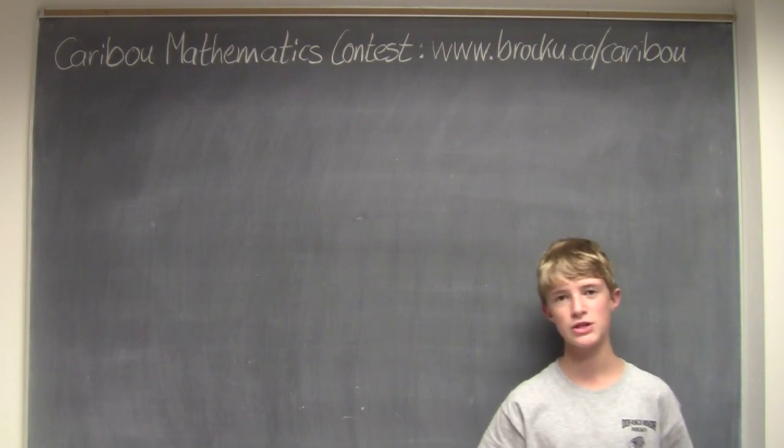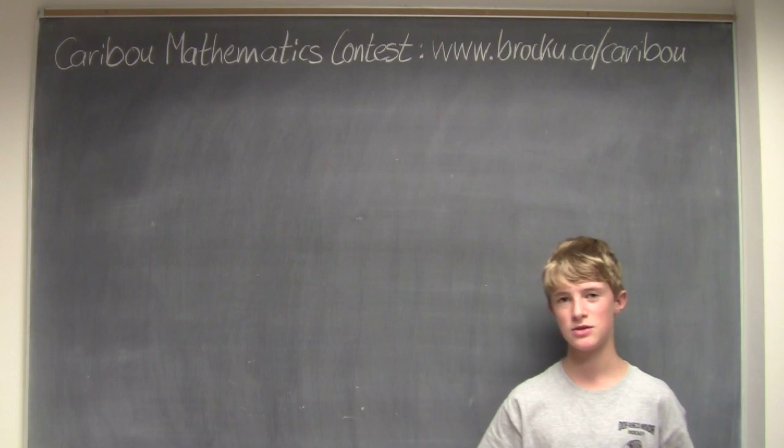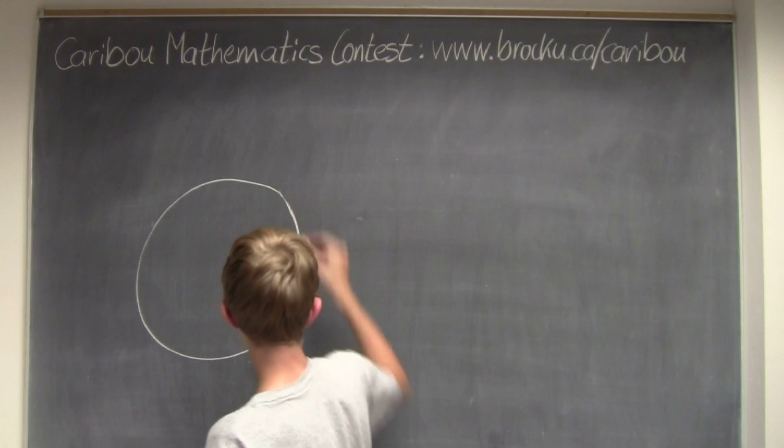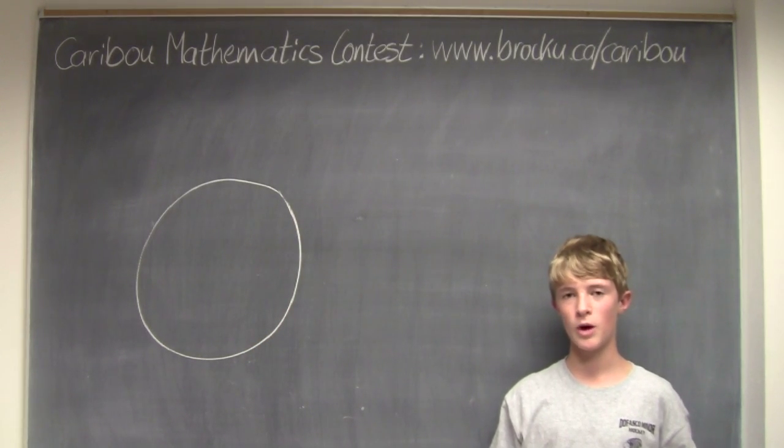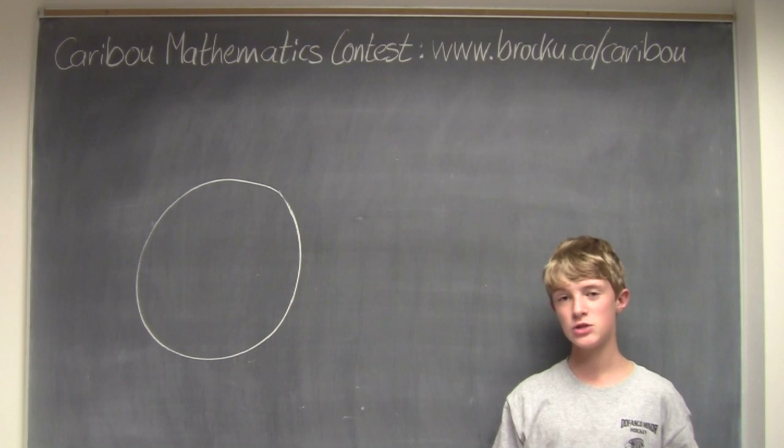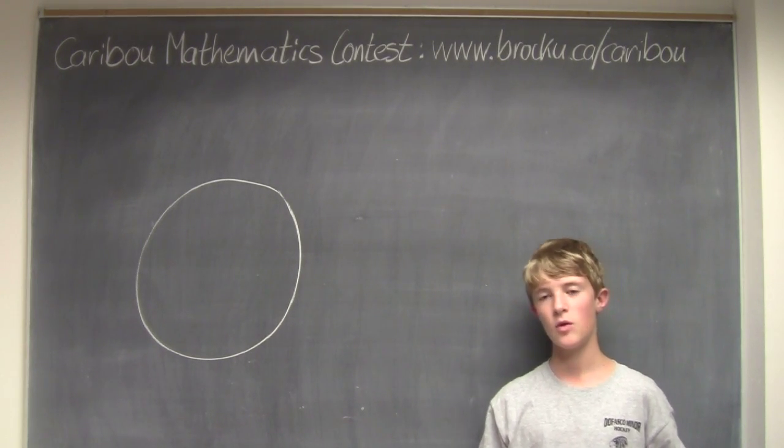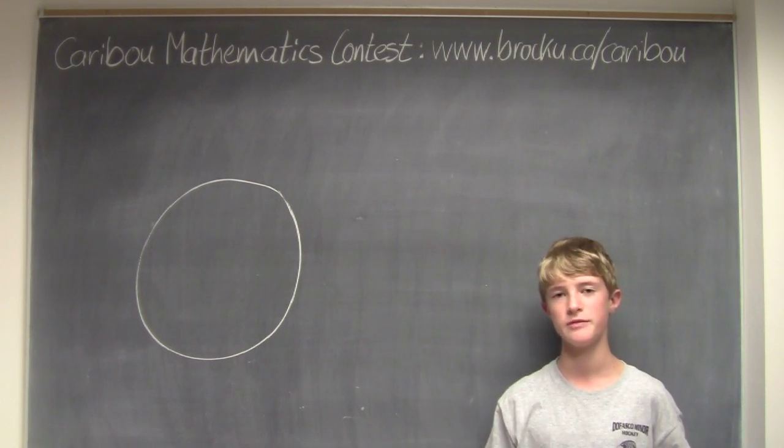Okay, so the question is, there are 15 dwarves and elves sitting in a circle. Elves always tell the truth and dwarves never tell the truth. Each one says that they have one elf and one dwarf as a neighbor. The question is, what are possible numbers for dwarves and elves?